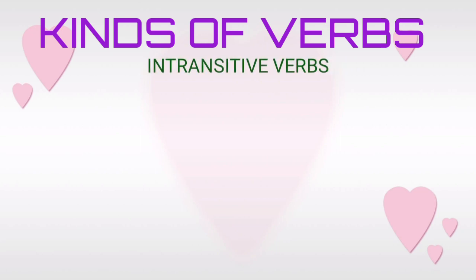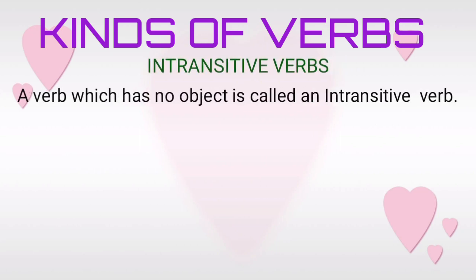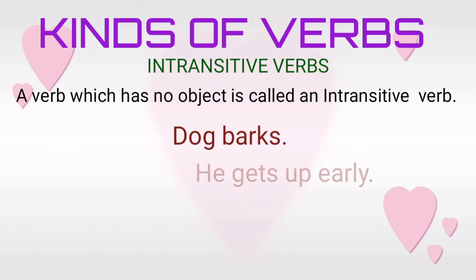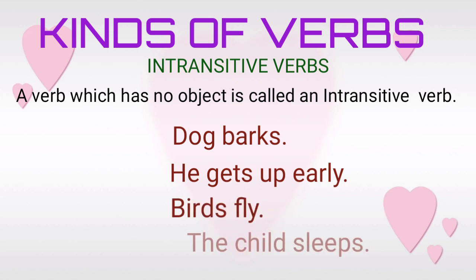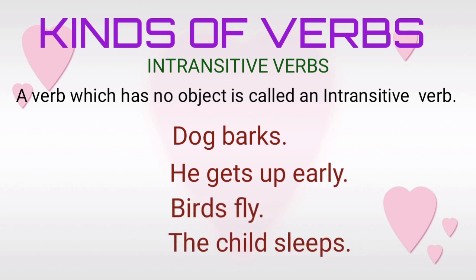Intransitive verb: A verb which has no object is called an intransitive verb. Examples: Dog barks. He gets up early. Birds fly. The child sleeps. Remember, an action which does not pass over to an object.